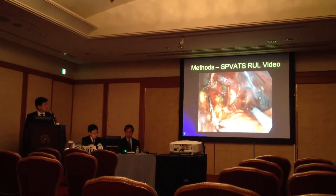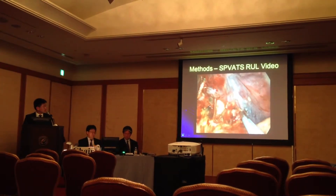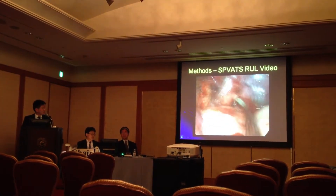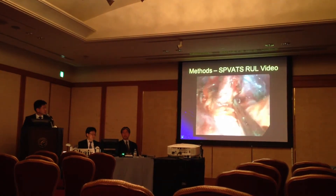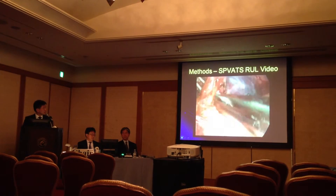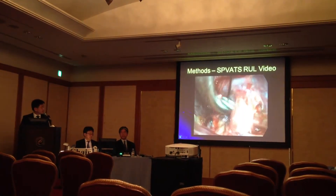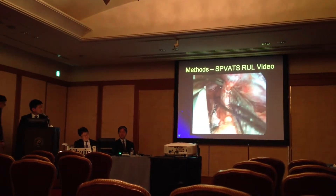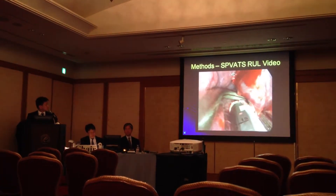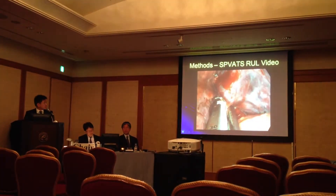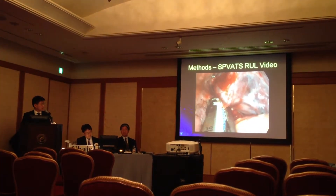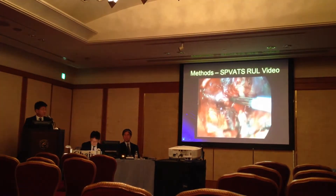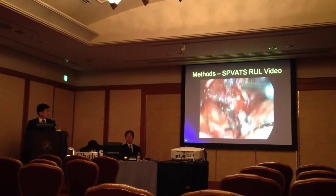After dividing the vein, we isolate the truncus anterior of the right upper lobe artery — very much the same way you would do a standard three-port VATS. We go around with the right-angle on both sides to isolate the pulmonary artery and then divide it. Now that the power Echelon stapler has come out, there is a lot more stability and you don't need to apply as much force when you fire.